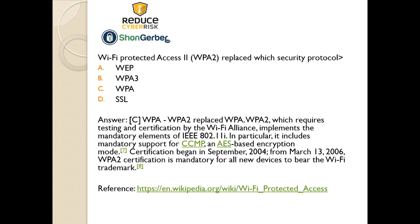WPA2 did replace WPA. It requires testing and certification by the Wi-Fi Alliance and implements mandatory elements of IEEE 802.11i. The technology changed and moved on to WPA2 and now into WPA3. WPA2 certification went from 2004 to 2006 and is mandatory for all new devices bearing the Wi-Fi trademark — just as they phased out WEP before. This maturation of the Wi-Fi world will continue, and Wi-Fi keeps getting bigger all the time. Check this out at Wi-Fi Protected Access on Wikipedia.